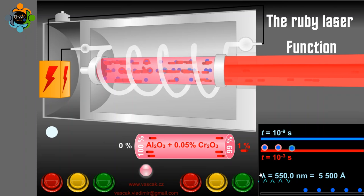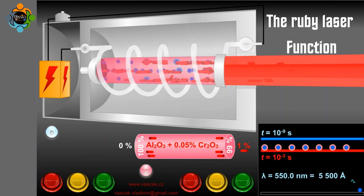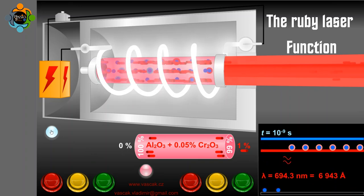This results in a coherent beam of laser light. The mirrors at each end of the rod reflect the light back and forth, amplifying it further with each pass. Eventually, a powerful laser beam is emitted through one of the mirrors.